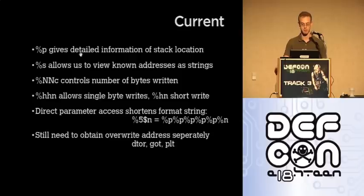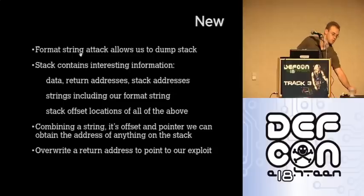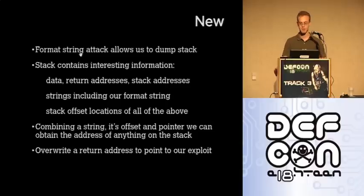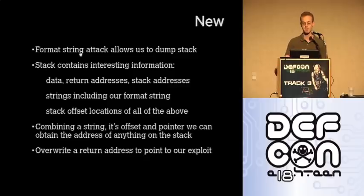Some of the advances have been direct parameter access, so rather than having to pop, say, ten things off the stack, you can just reference the tenth parameter directly. But you still need to use external tools to access where you want to actually overwrite your code. The technique I've been working on basically utilizes information from dumping the stack. Most C programs have interesting information on the stack, and you can use this information to leverage piece by piece of an exploit leading to eventual compromise of the application.